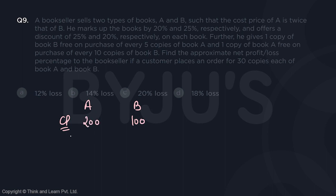He marks up the books by 20% and 25%. So what is the marked price of A and B? Increasing A's cost price of 200 by 20% gives a marked price of 240. Increasing B's cost price of 100 by 25% gives a marked price of 125.